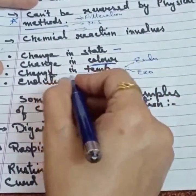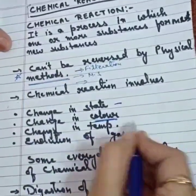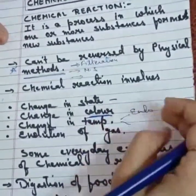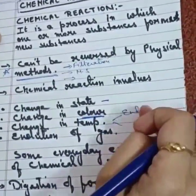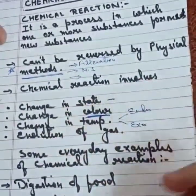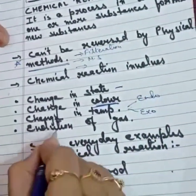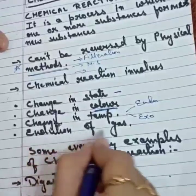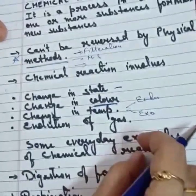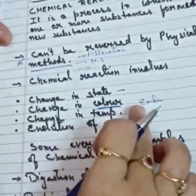Change in color can also occur in some chemical reactions, which helps us identify that a chemical reaction has taken place. A chemical reaction also leads to change in temperature — it can be endothermic or exothermic. Endothermic means heat is absorbed during the course of reaction, and exothermic means heat is liberated during the course of reaction. Also, it can involve the evolution of a gas during the course of a chemical reaction. These are the common changes that accompany a chemical reaction.